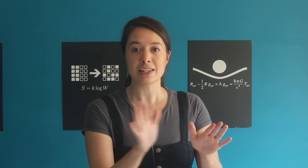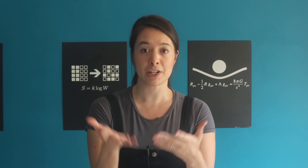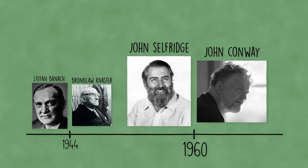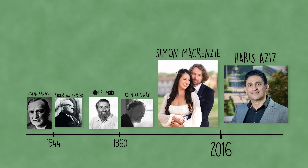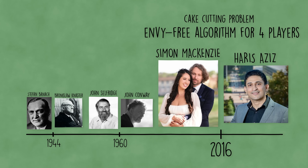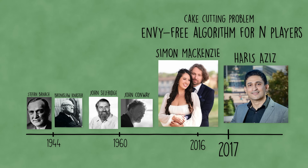This procedure guarantees envy-freeness in all cases, but it only works for three players. This is where the cake cutting problem stood for 40 years — no one could figure out an envy-free algorithm for four or more players. Until 2016, when two computer scientists, Harris Aziz and Simon McKenzie, first came up with a protocol for four players, and then the very next year a protocol for any number of players, finally putting the 70-year math problem to rest.